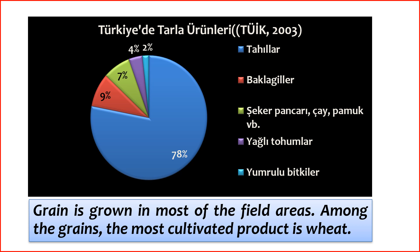Vegetable production declined in 2022 compared to the previous year. The production amount of vegetable products decreased by 0.5% in 2022, reaching approximately 31.6 million tons. In the vegetables group, cucumber production increased by 2.6%, carrots by 33.5%, and tomato paste capia pepper by 2.5%. However, there was a decrease of 0.7% in tomatoes, 2.1% in watermelon, and 6% in onions.